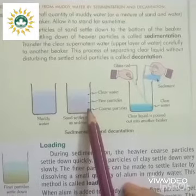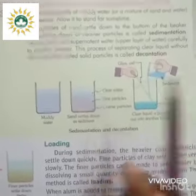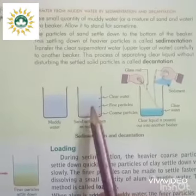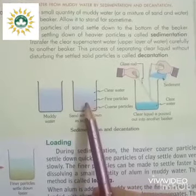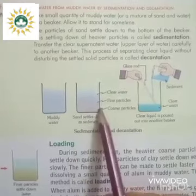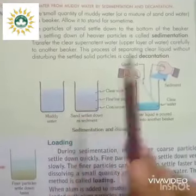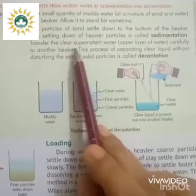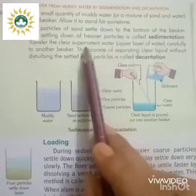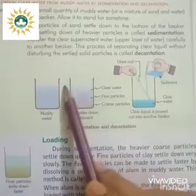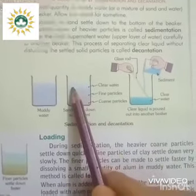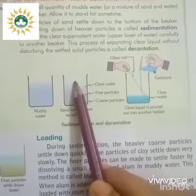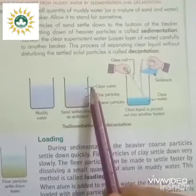This settling down of heavier particles to the bottom is called sedimentation. After settlement, the clear water above — called supernatant water — is carefully transferred to another beaker. The upper layer of water is called supernatant water.